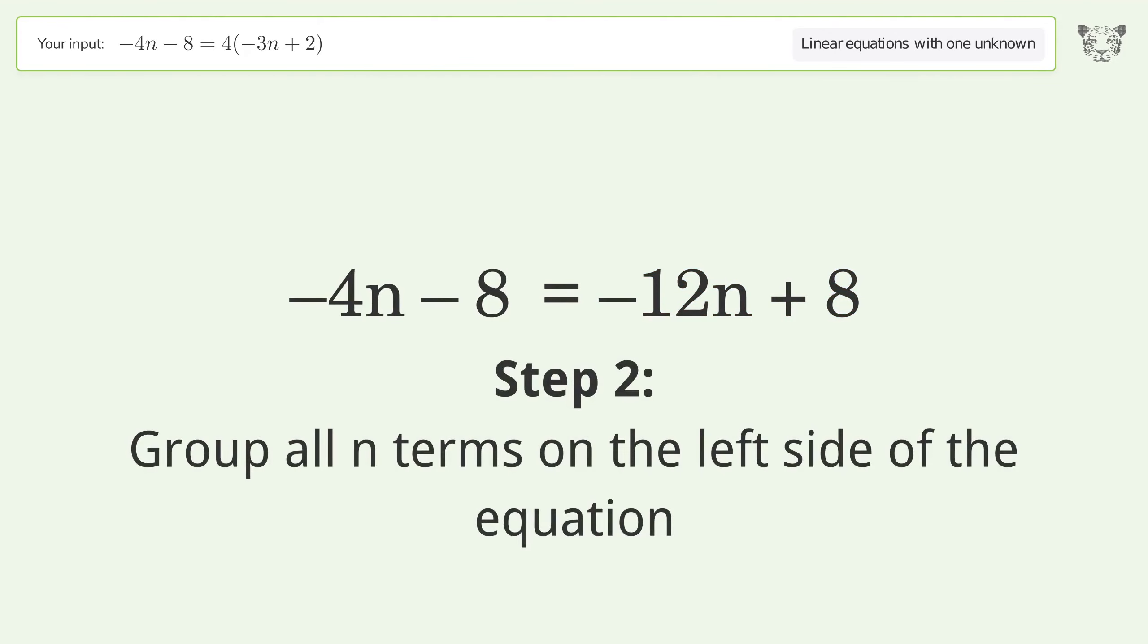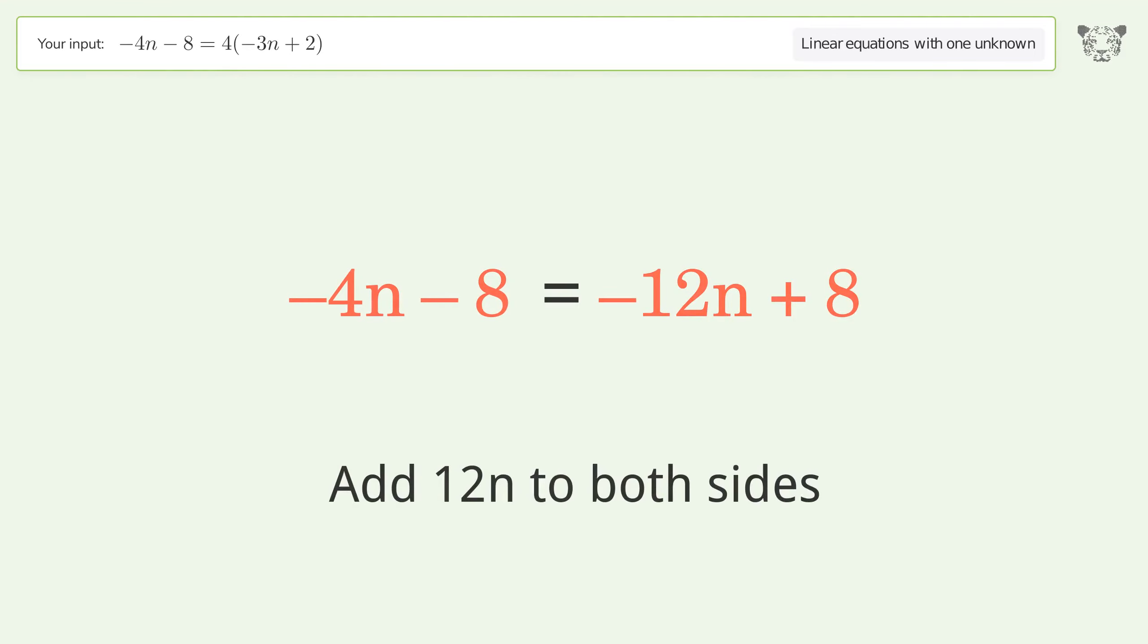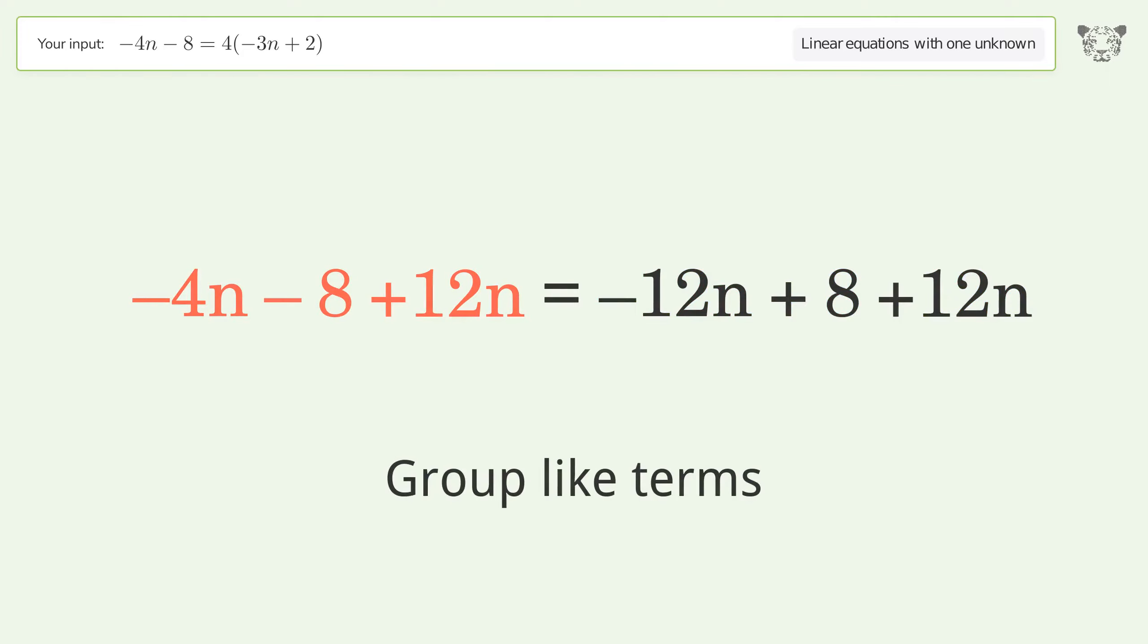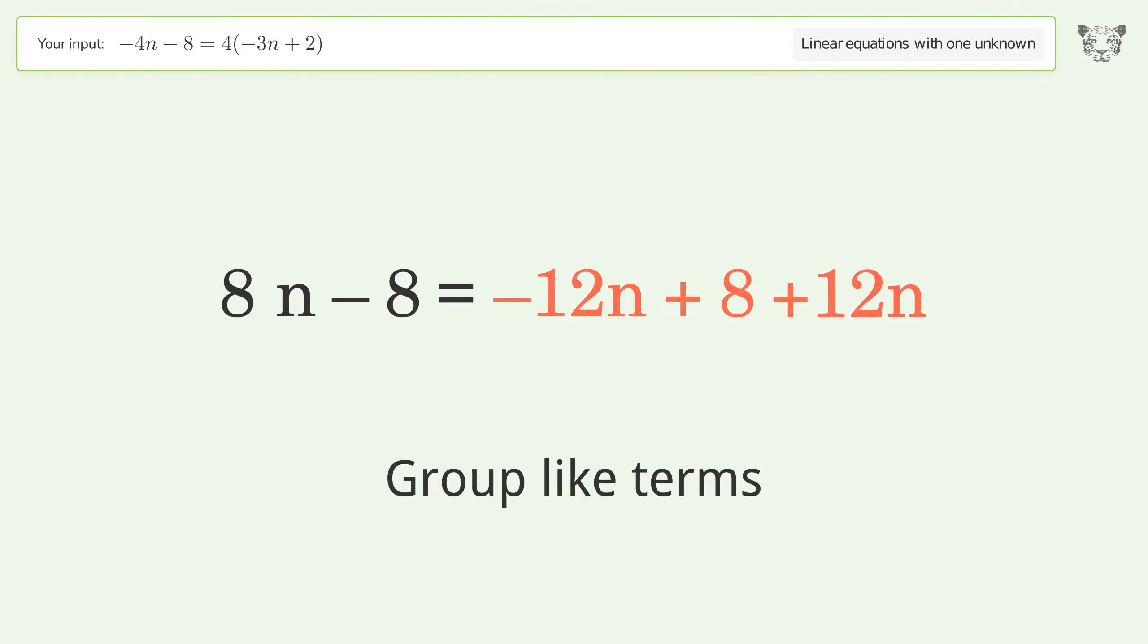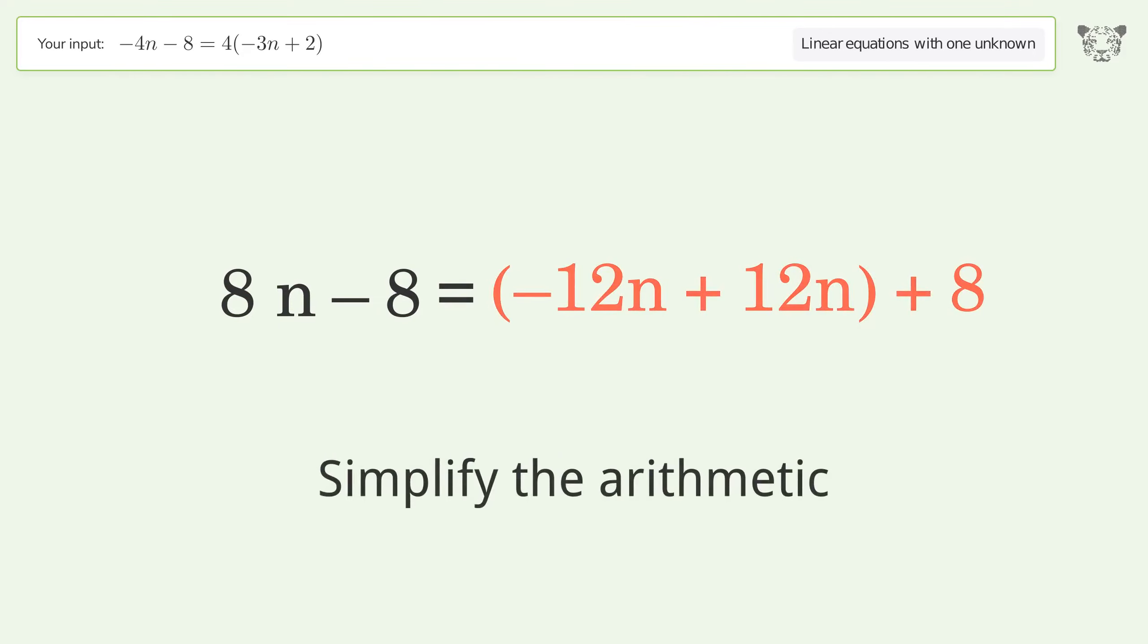Group all n terms on the left side of the equation. Add 12n to both sides, group like terms, and simplify the arithmetic.